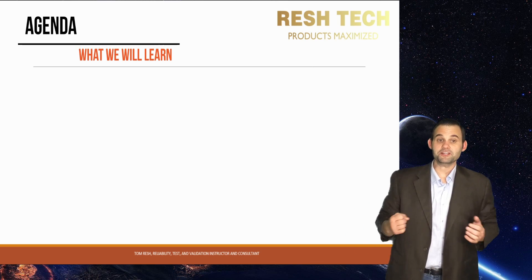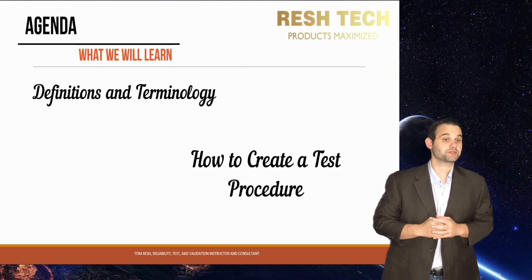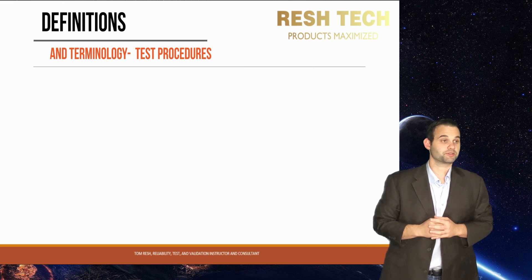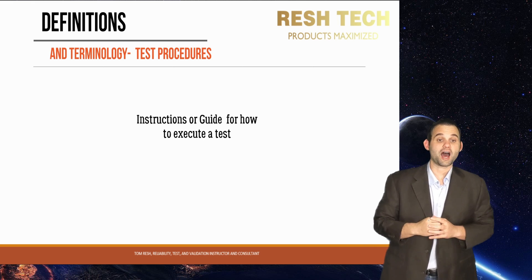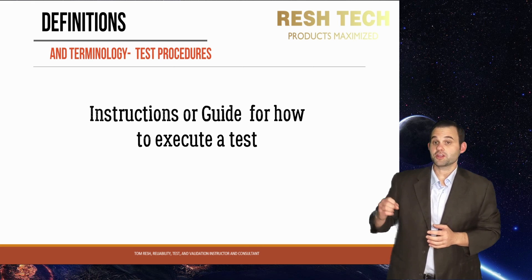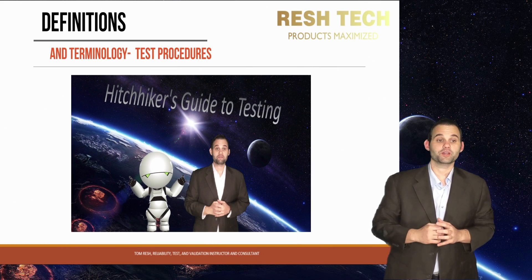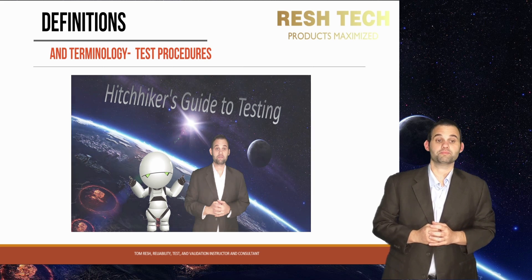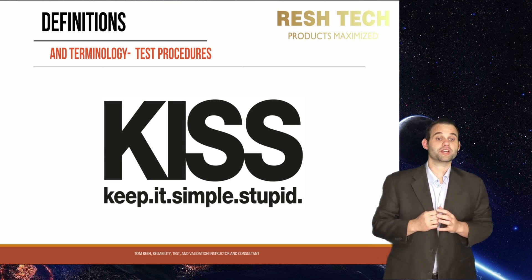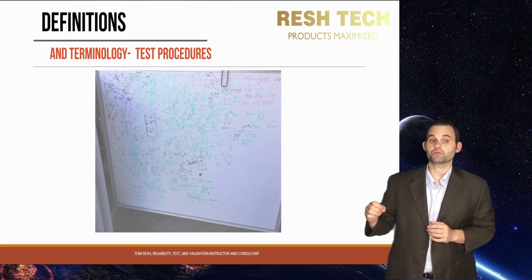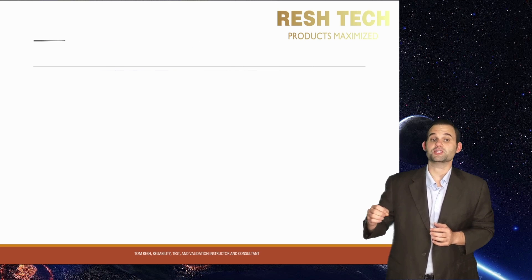In this video, we will learn about definitions and terminology in how to create a test procedure. A test procedure is the instructions or guide for how we execute a particular test. This is the procedural process that you, a delegate, or a third-party test lab will need to follow in order to perform the desired test to the desired requirements at the highest level of quality possible. You need to provide the instructions in a clear and concise manner — short and sweet, written with as few words as possible. Don't write a novel or people will not read the instructions in their entirety and will potentially miss important steps.